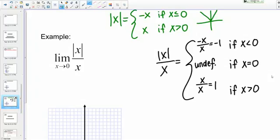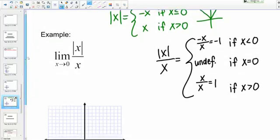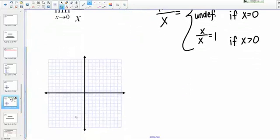I see my three pieces here. The function is negative 1, then it's undefined, and then it's positive 1. Let me quickly sketch what that would look like on a graph.